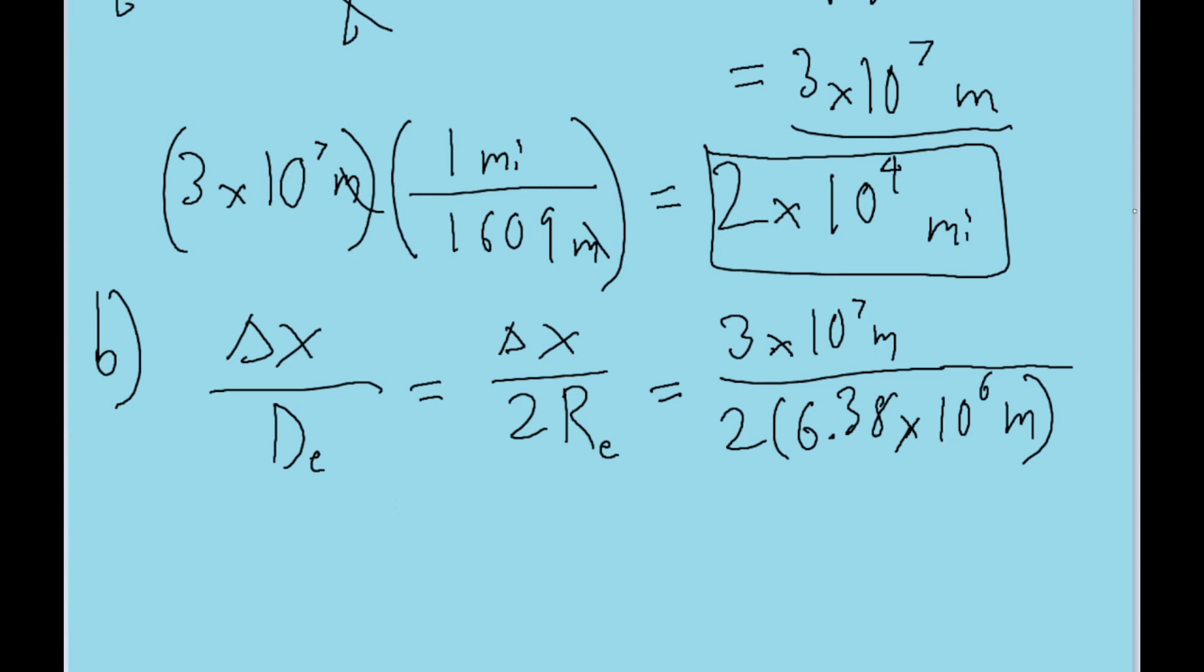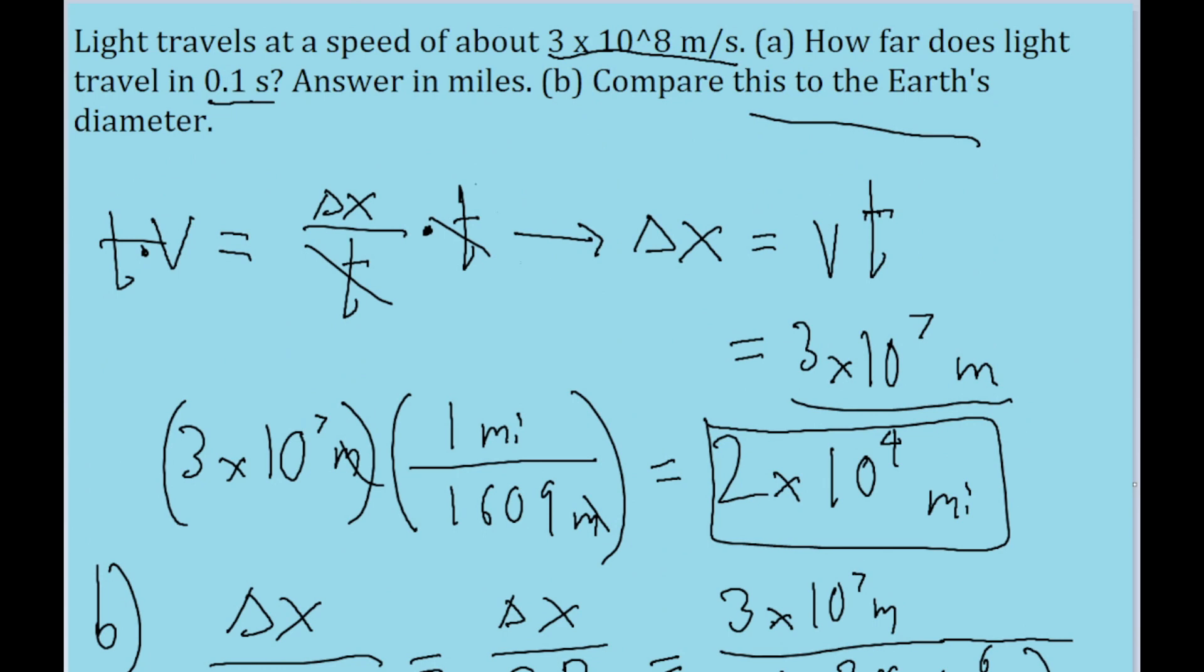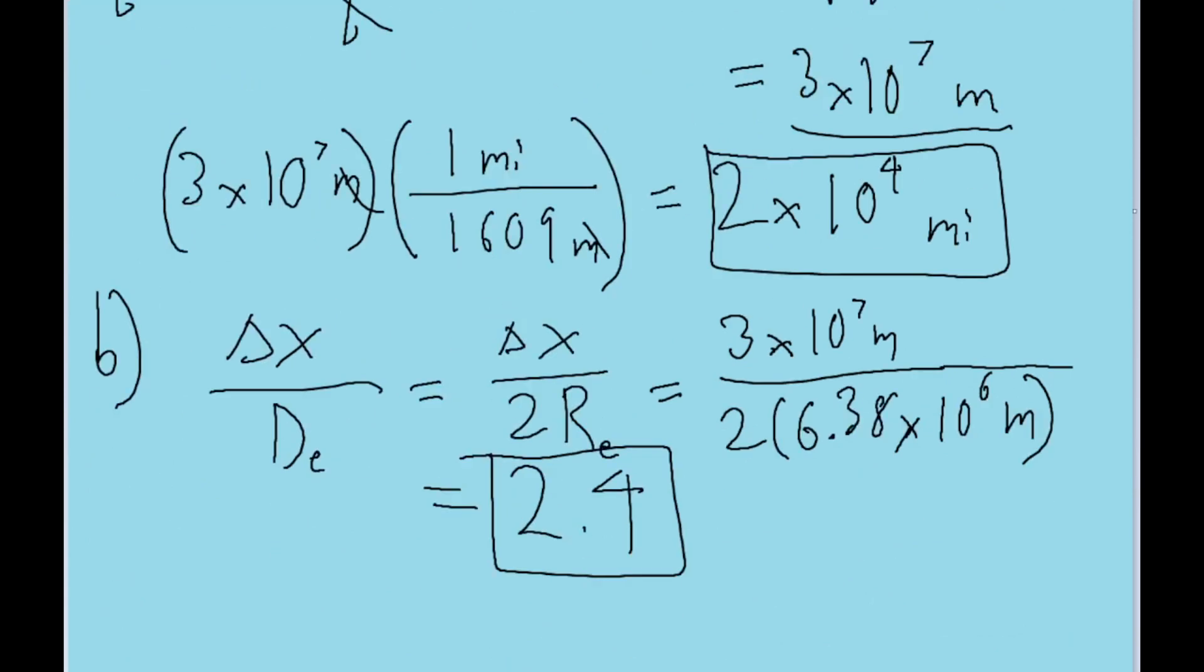It's approximately 6.38 times 10 to the power of 6 meters. And if we were to put that into our calculator, then we find a ratio of about 2.4. Which means that in 0.1 seconds, about as long as it takes for you to blink your eye, light travels the distance of about 2.4 Earths. That's pretty insane.